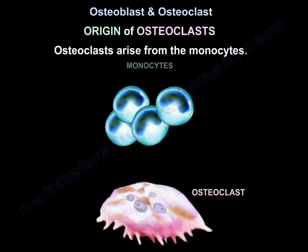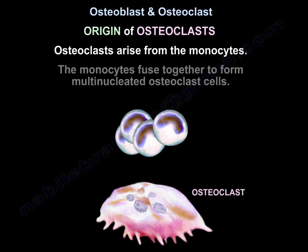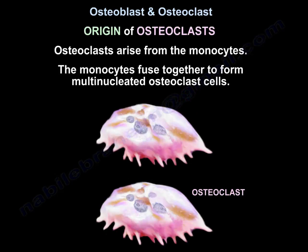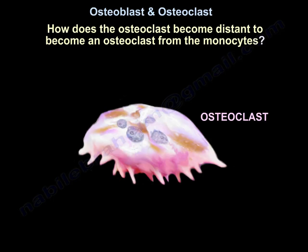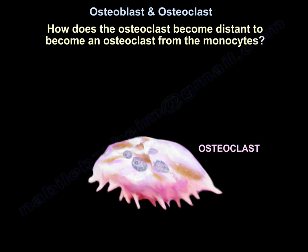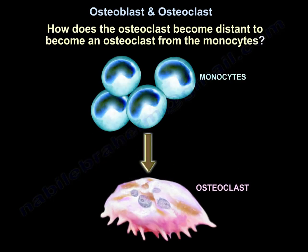The Osteoclasts arise from the monocytes. The monocytes fuse together to form multi-nucleated Osteoclast cells. This is how the Osteoclast becomes distinct from the monocytes.